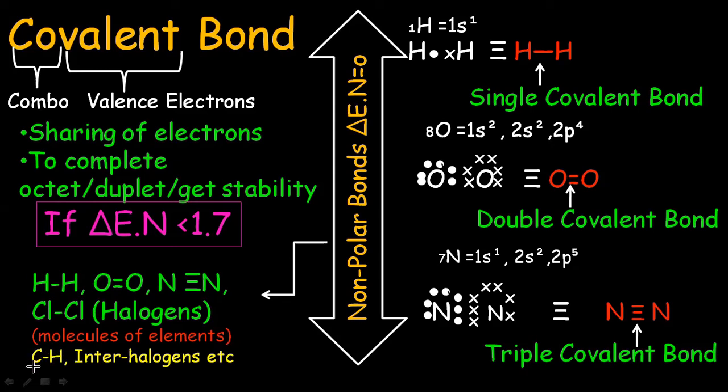Moreover, the bonds formed by carbon and hydrogen have electronegativity difference less than 1.7. So it is also a nonpolar covalent bond. The bonds formed by interhalogens are also the nonpolar covalent bonds.